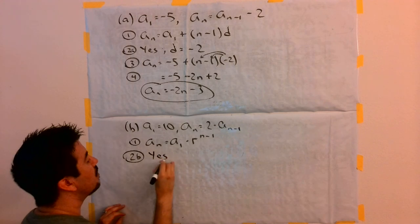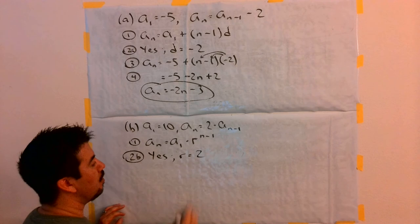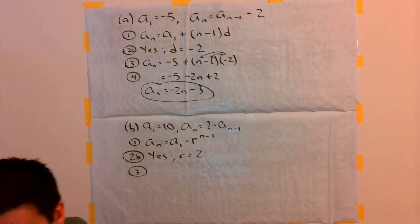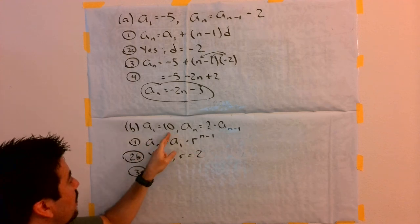So, I say yes, and instead of d, I'm going to put in r equals the number in front, which is 2. Step 3 now says, I'm going to replace the a1 term, which was given to us as the number 10, here.